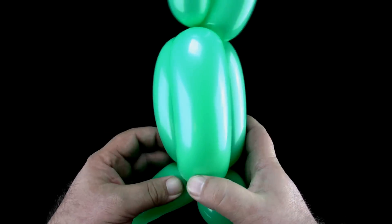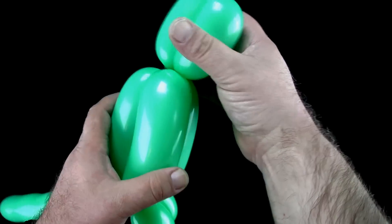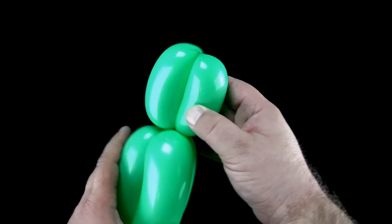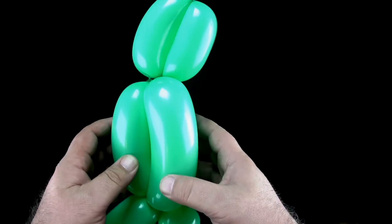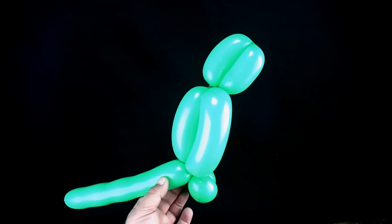The remainder is the tail. And that is how to make a balloon parrot.